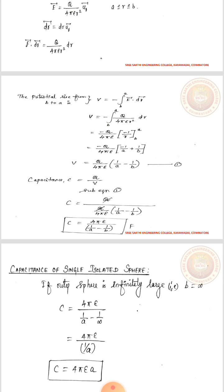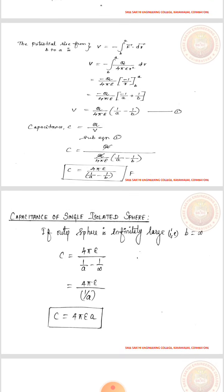The total charge Q is the same. So C equals Q by V. Applying the value of V and cancelling the Q term, the capacitance is given by 4 pi epsilon divided by the quantity 1 by a minus 1 by b, in farads.